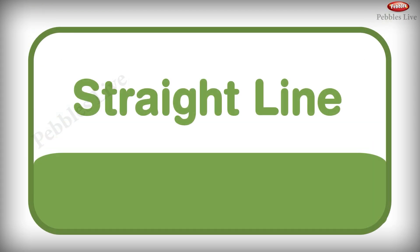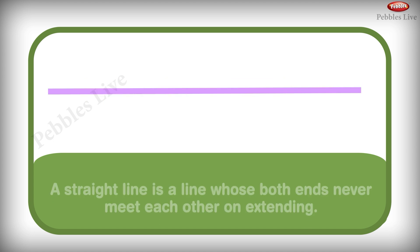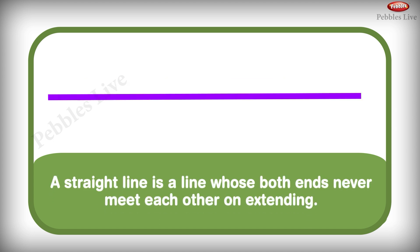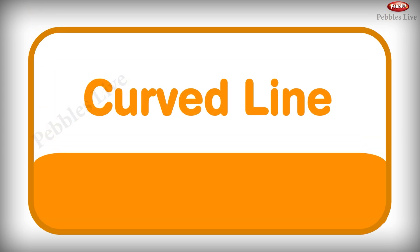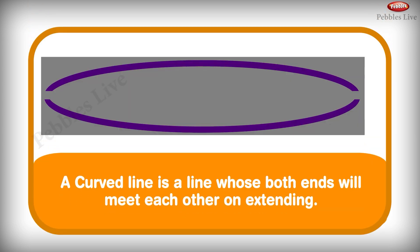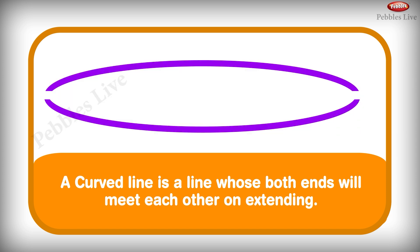A straight line is a line whose both ends do not meet each other on extending. A curved line is a line whose both ends will meet each other on extending.